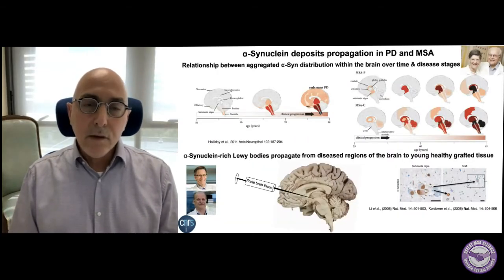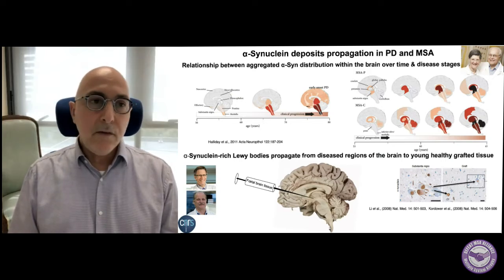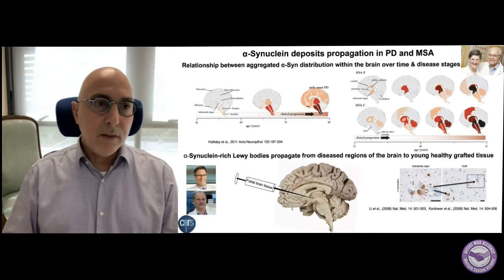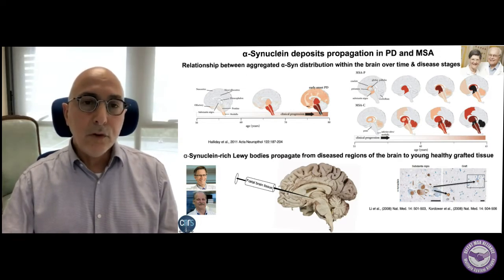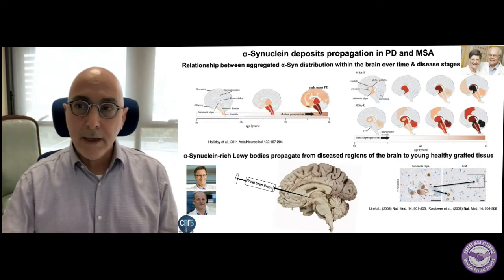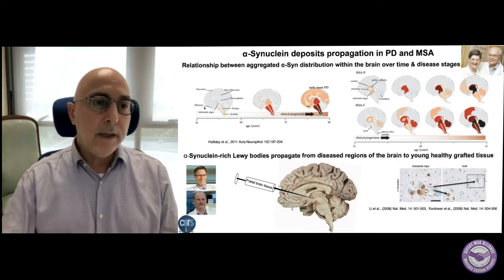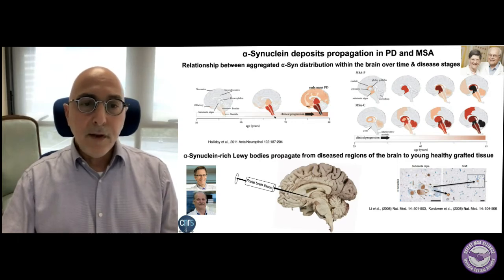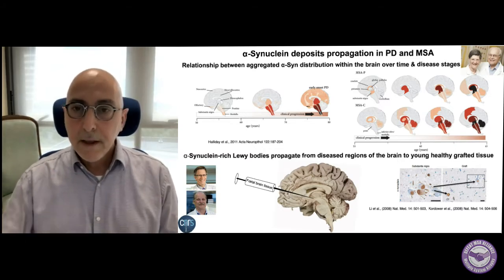We have evidence that alpha-synuclein deposits propagate in the brain of Parkinson's disease patients and multiple system atrophy patients. These evidences come from two sets of works. The first evidence comes from a relationship between the distribution of alpha-synuclein pathology within the brain over time and disease stages. This relationship was established by Heiko Braak and his group. In Parkinson's disease, the first regions affected by this pathology — these clumps of alpha-synuclein — are the olfactory bulb and the brain stem.